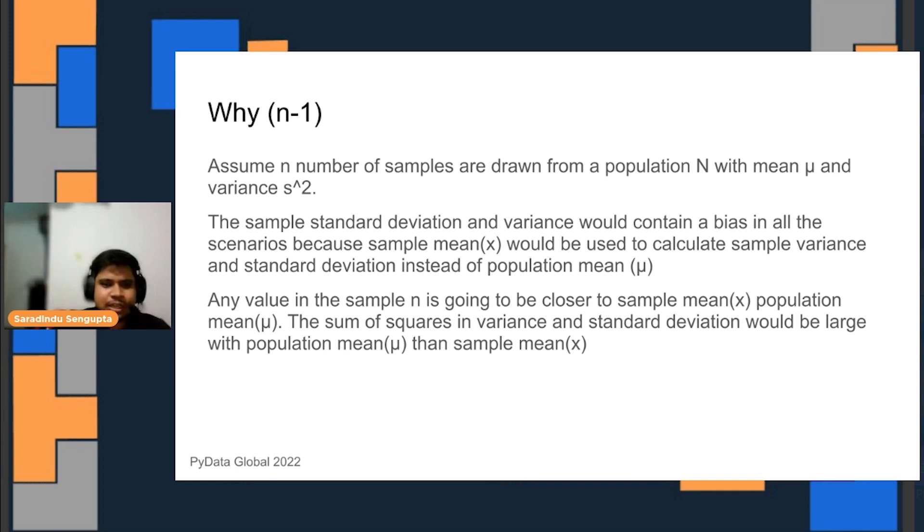The idea is that the population mean and the sample mean would be quite different depending on the sample size from a population size. For example, if you have sample mean x and population mean as mu, the issue would be that the sum of squares for variance and standard deviation would be higher in case of population mean and lower in case of sample mean.